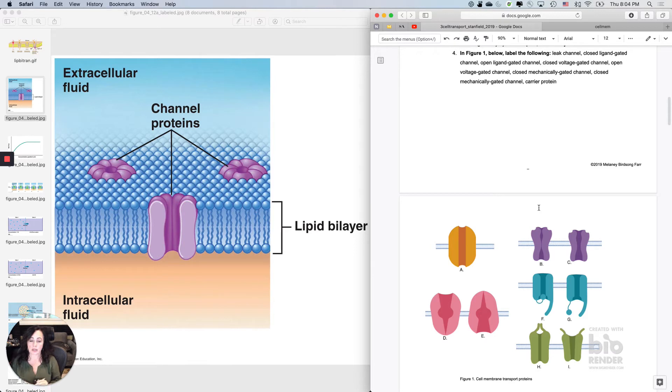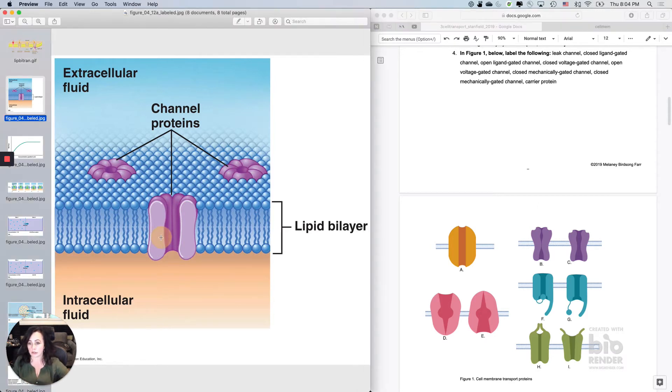So there are a few different kinds of channels. The channel that you're seeing in this figure right here would probably be referred to as a leak channel, meaning that it's always open. It's basically like a door frame without a door in it, and things can fit in and out down their concentration and electrical gradients just at will. Here is a good example right here of a leak channel. Things can just go in and out.